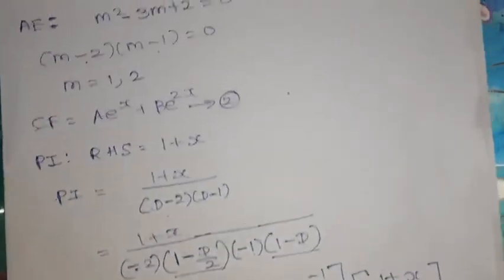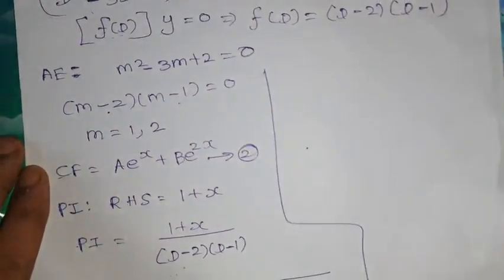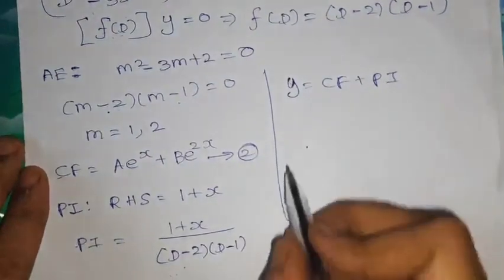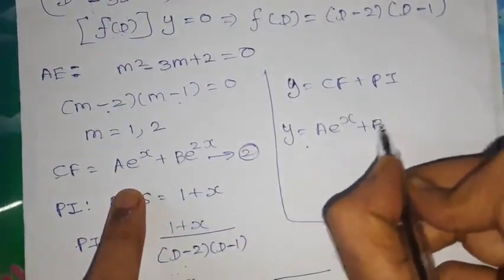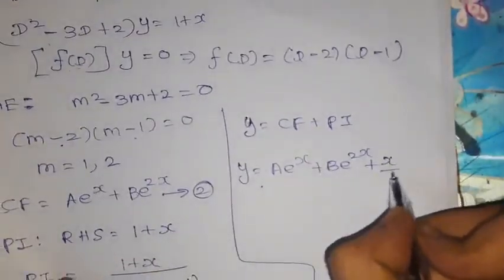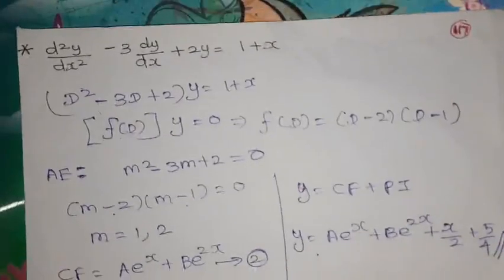The complete solution is y = CF + PI: y = A·e^x + B·e^(2x) + x/2 + 5/4. This is the complete solution for this differential equation.